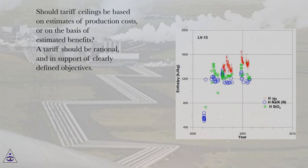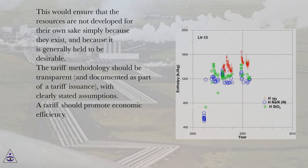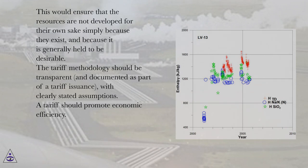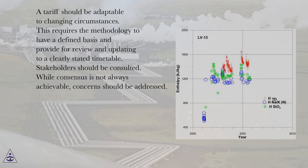Should tariff ceilings be based on estimates of production costs or on the basis of estimated benefits? A tariff should be rational and in support of clearly defined objectives. This would ensure that resources are not developed for their own sake simply because they exist and because it is generally held to be desirable. The tariff methodology should be transparent and documented as part of a tariff issuance with clearly stated assumptions. A tariff should promote economic efficiency and be adaptable to changing circumstances. This requires the methodology to have a defined basis and provide for review and updating to a clearly stated timetable.